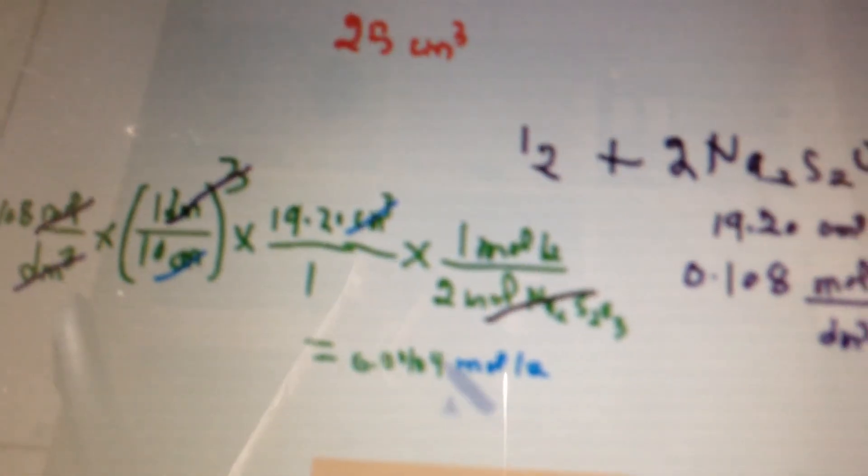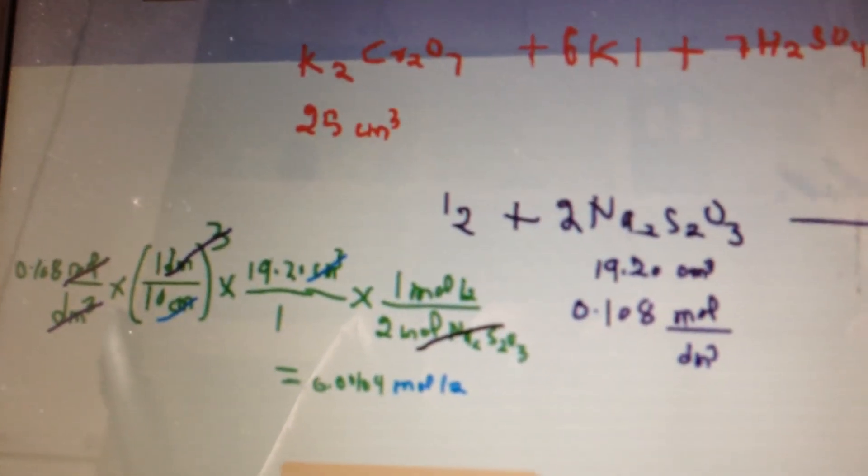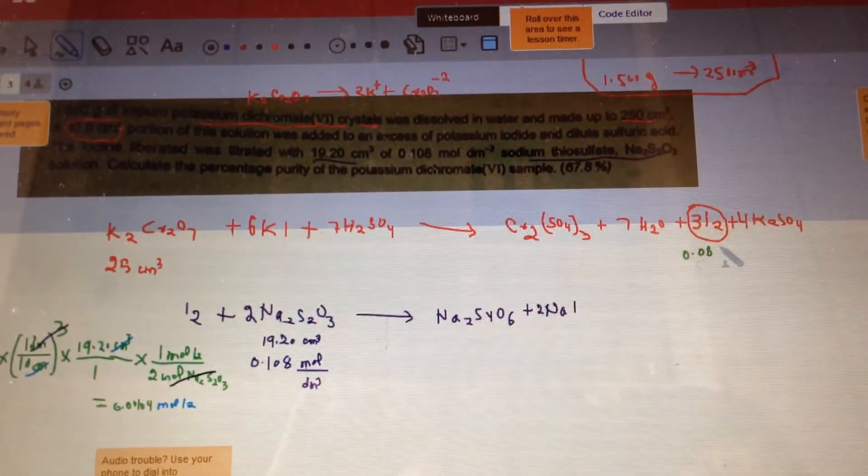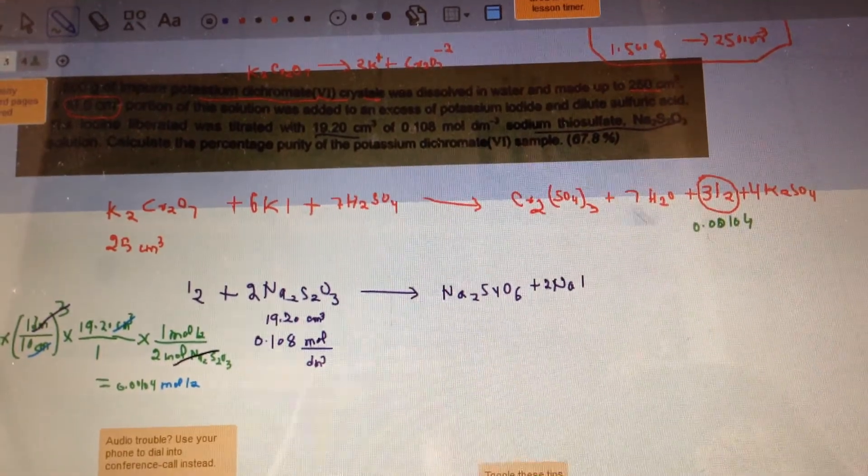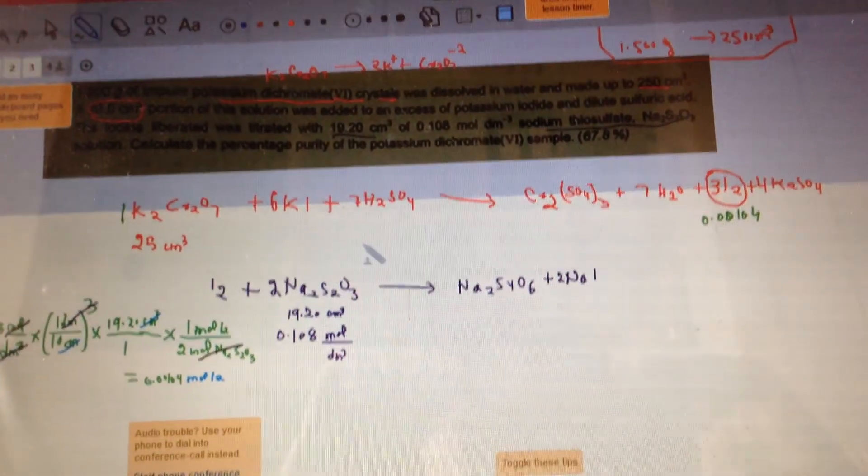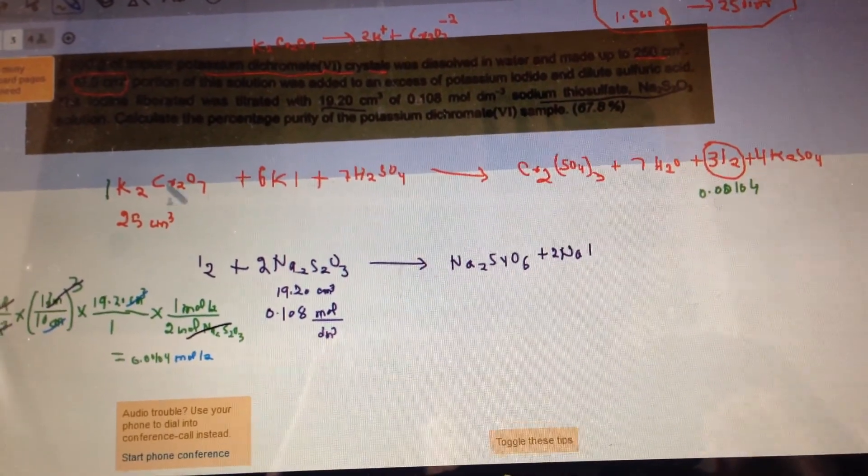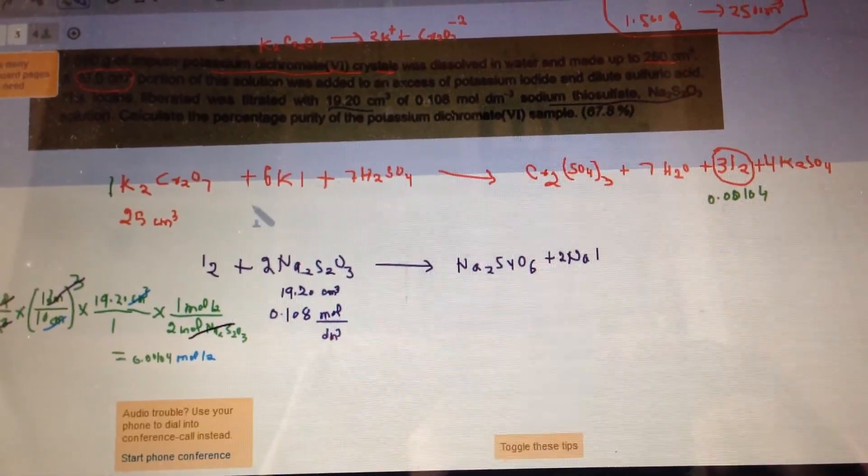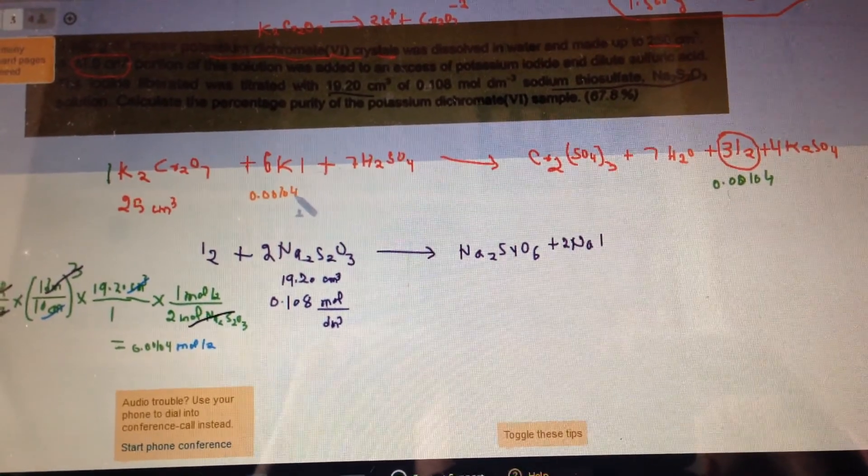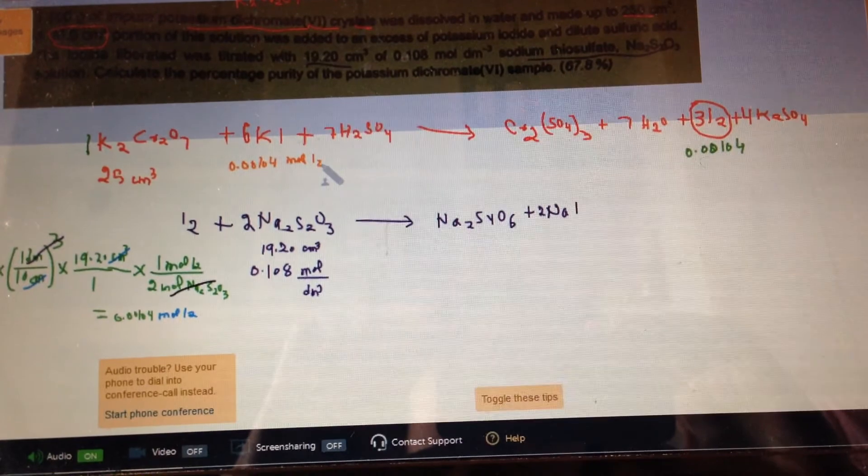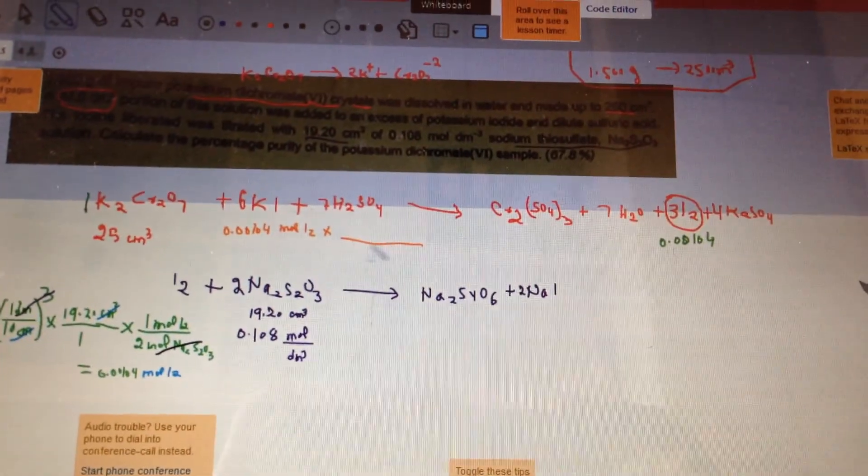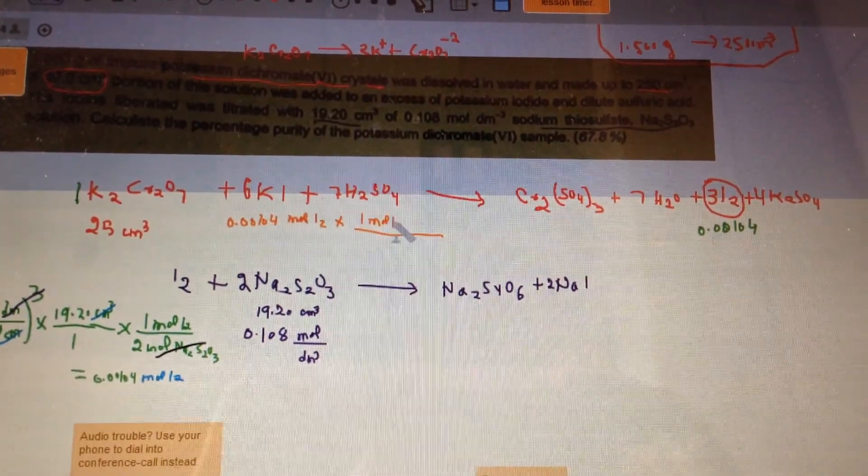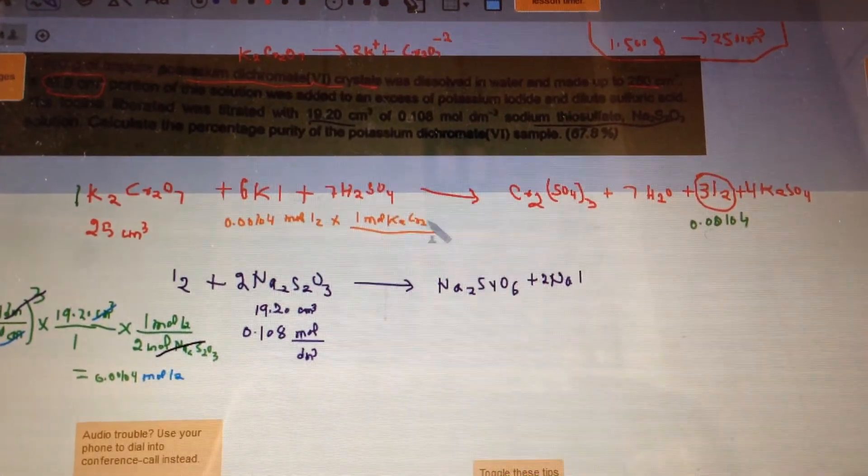Now, these are the I2 that was produced in the previous reaction. That means the moles of I2. And the first reaction we wrote down was 0.00104. Now, from here, we can calculate the moles of K2Cr2O7, considering we know the mole ratio of I2 and K2Cr2O7. So that's going to be 0.00104 moles of I2 times the ratio for K2Cr2O7.